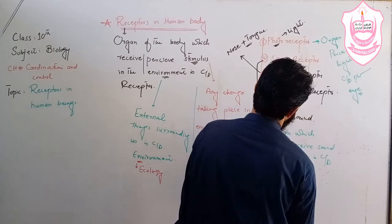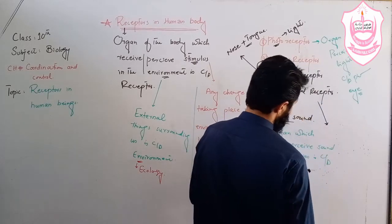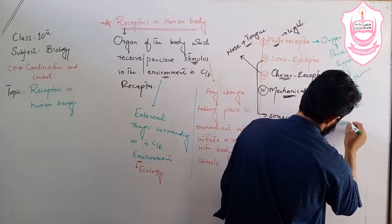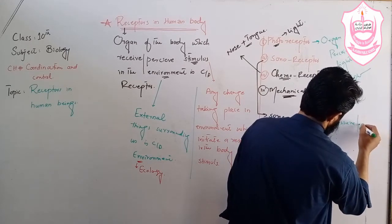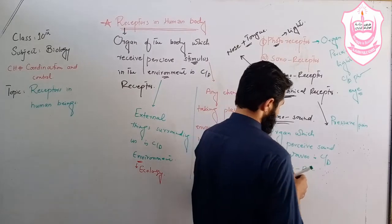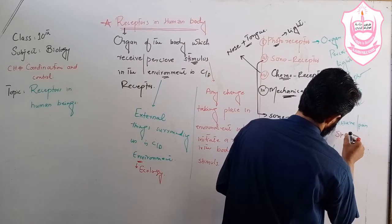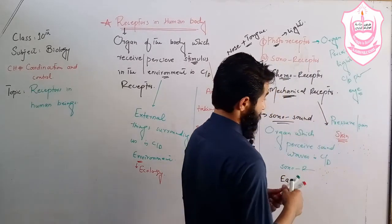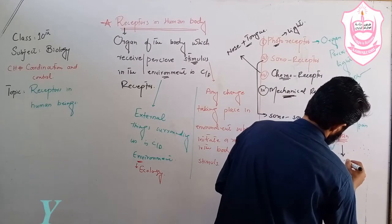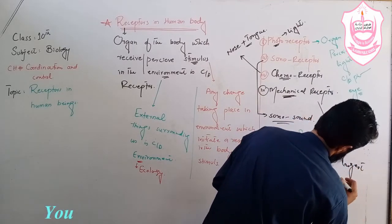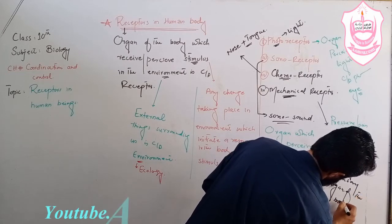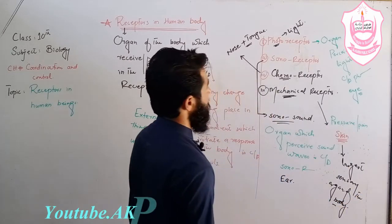Now coming toward the mechanical receptor. The receptor which perceives or receives pressure, or simply which detects pain, is called a mechanical receptor, also known as thigmoreceptor. For example, the skin — it is the largest sensory organ of the body — is a mechanical receptor.